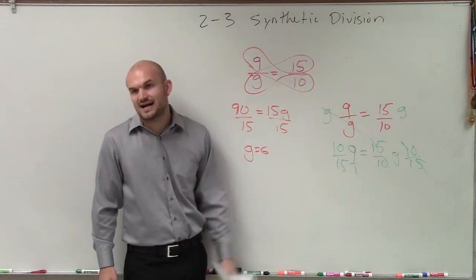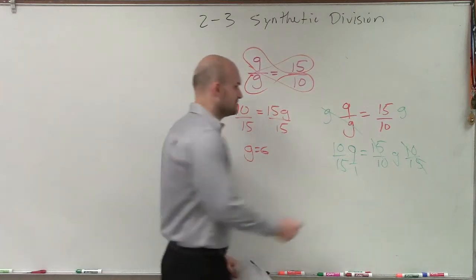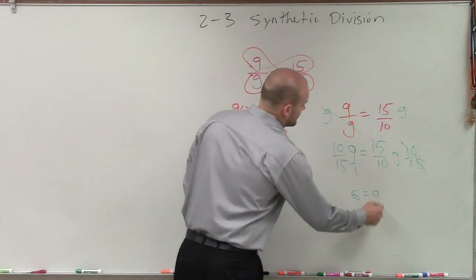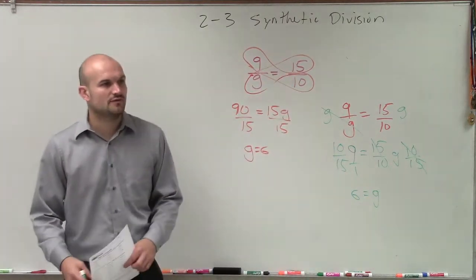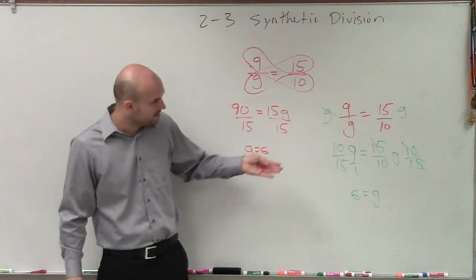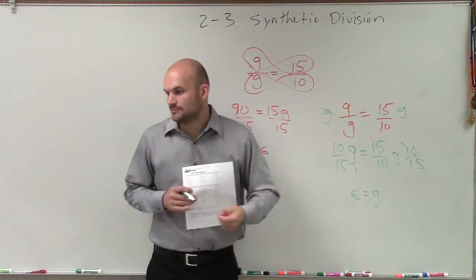Well, 10 times 9 is 90, divided by 5 is 6. So there's two different ways to solve that. I know you guys probably prefer cross multiplication. It's not a problem. I just want you to understand the other way as well.